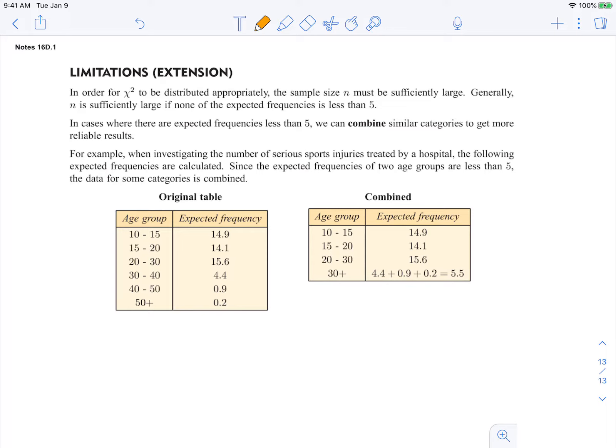There are some limitations that can occur within this test. In order for chi-squared to be distributed appropriately, the sample size n, so how many pieces of data you collect, must be sufficiently large.